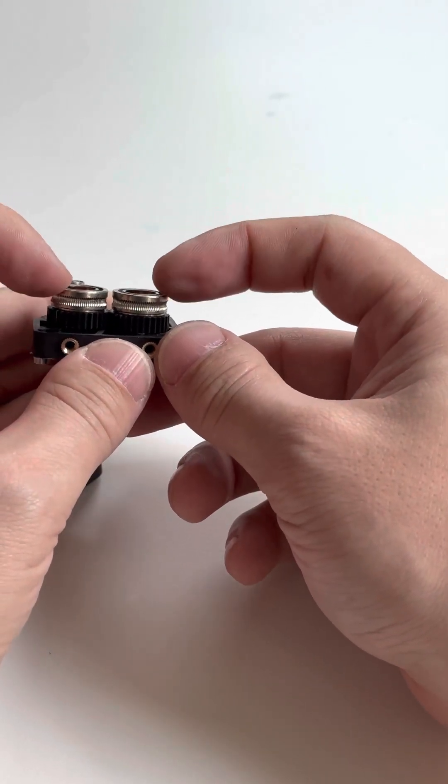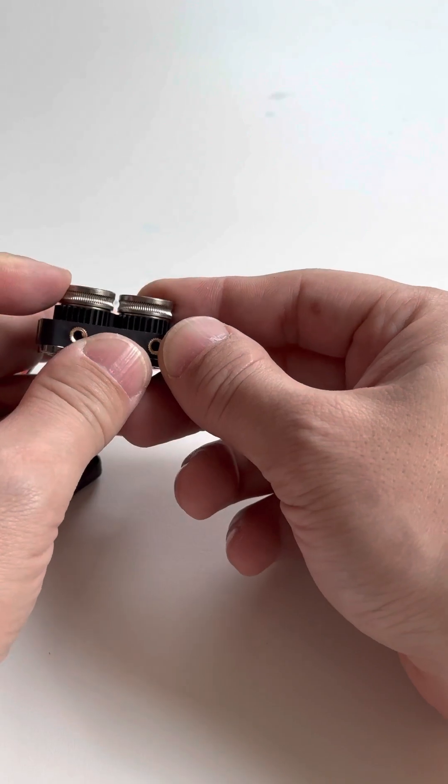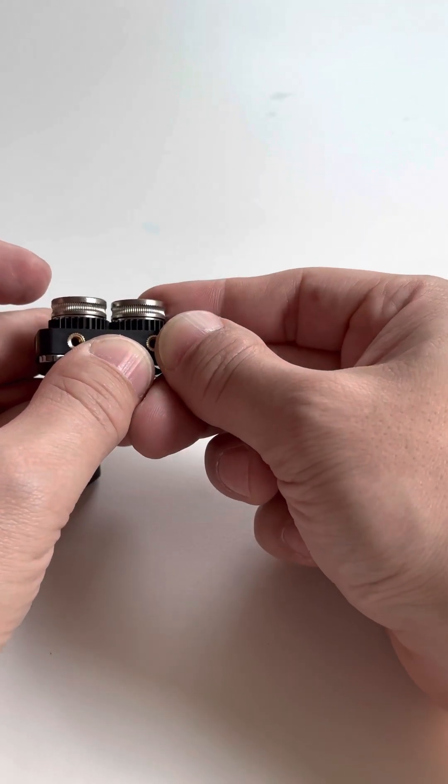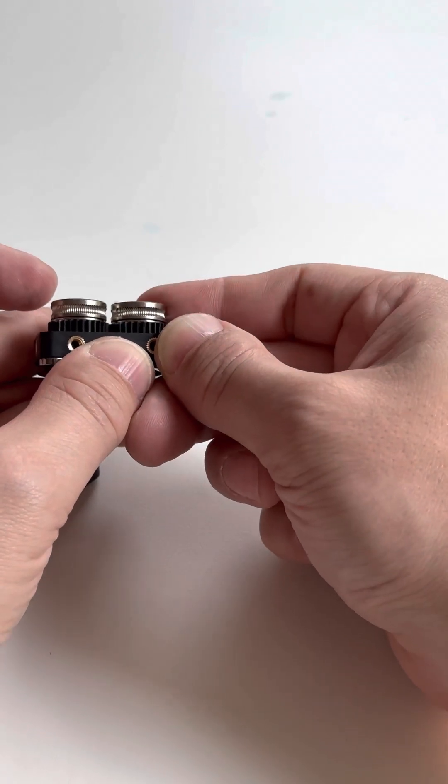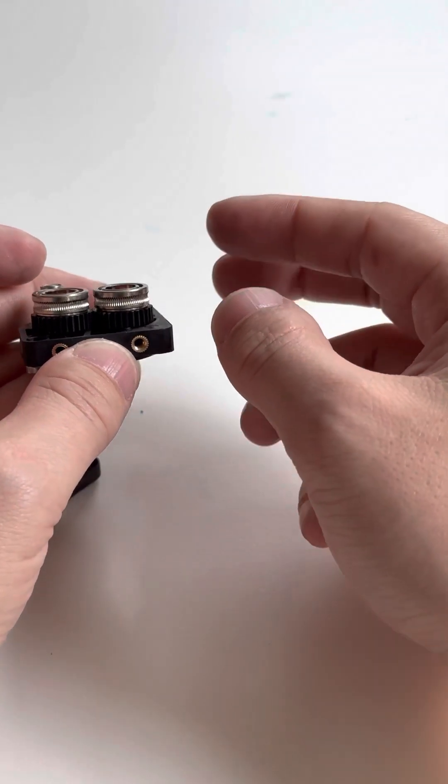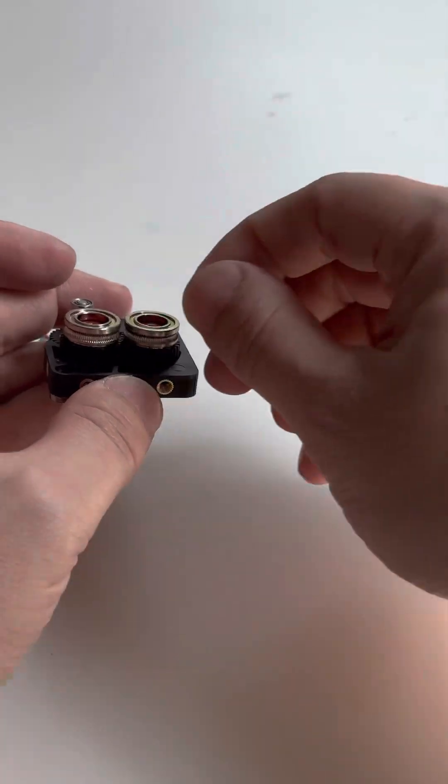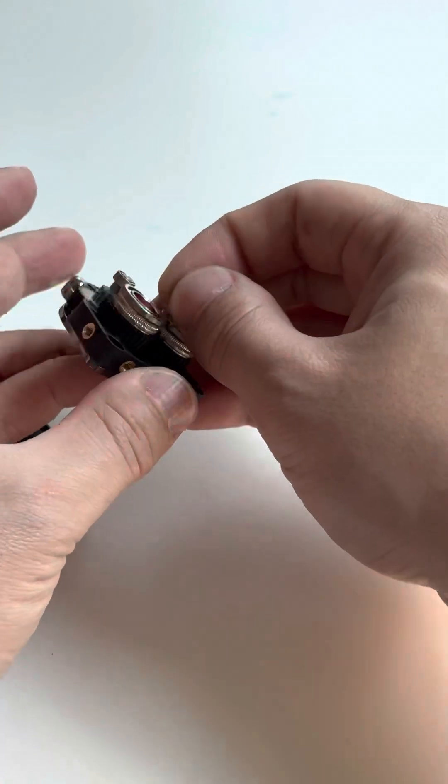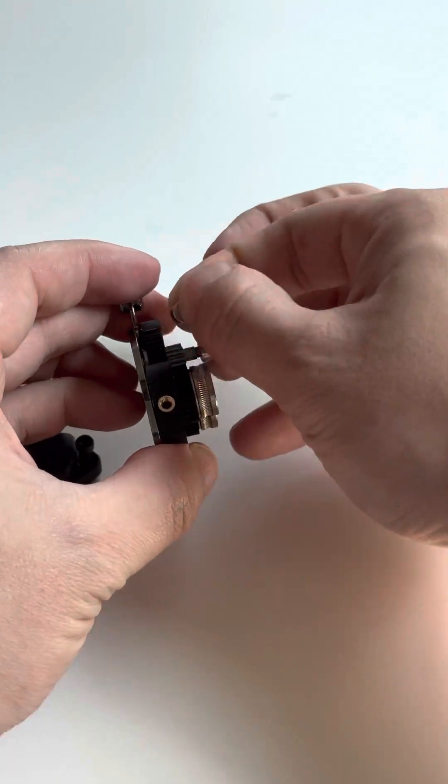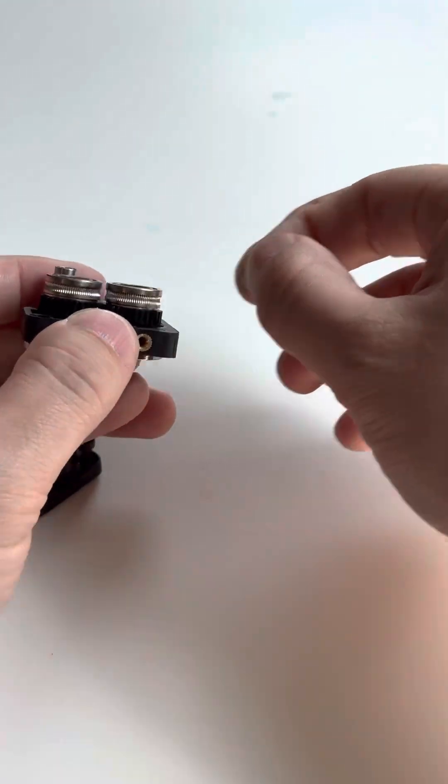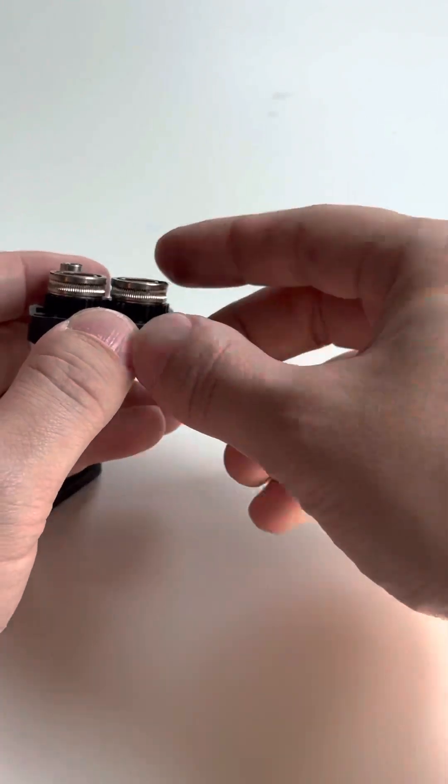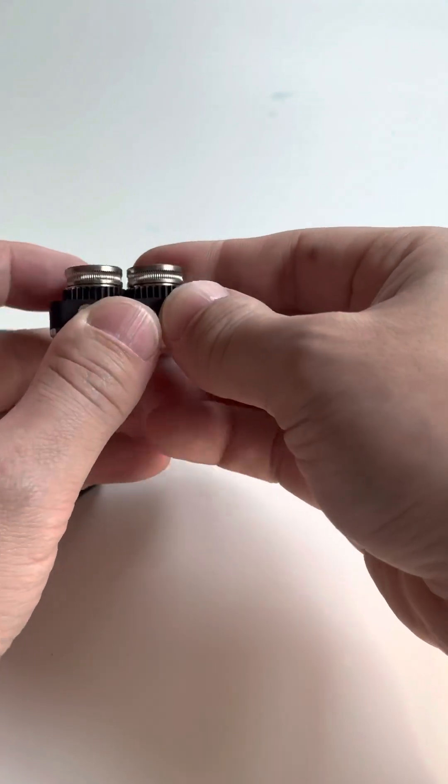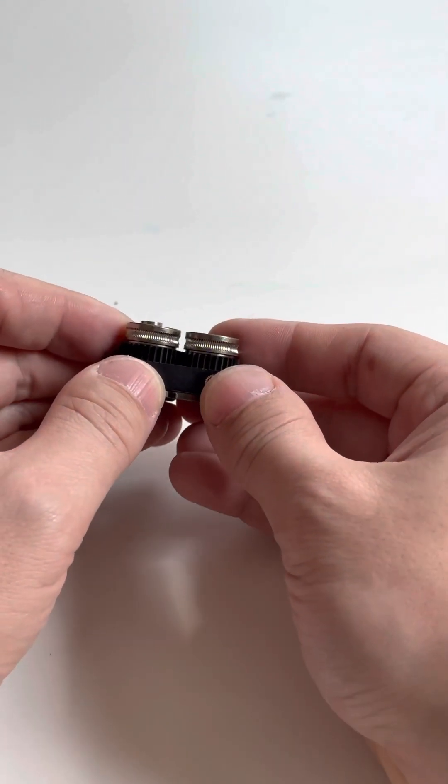Also, on these two little drive things that are powering the extruder, you can see it's two materials here yet again. So one material is some kind of ferrous metal. Same with this one over here. The magnet wants to stick to it. And then they overmolded some plastic gears onto them. So that's a pretty cool combination of assembly manufacturing processes.